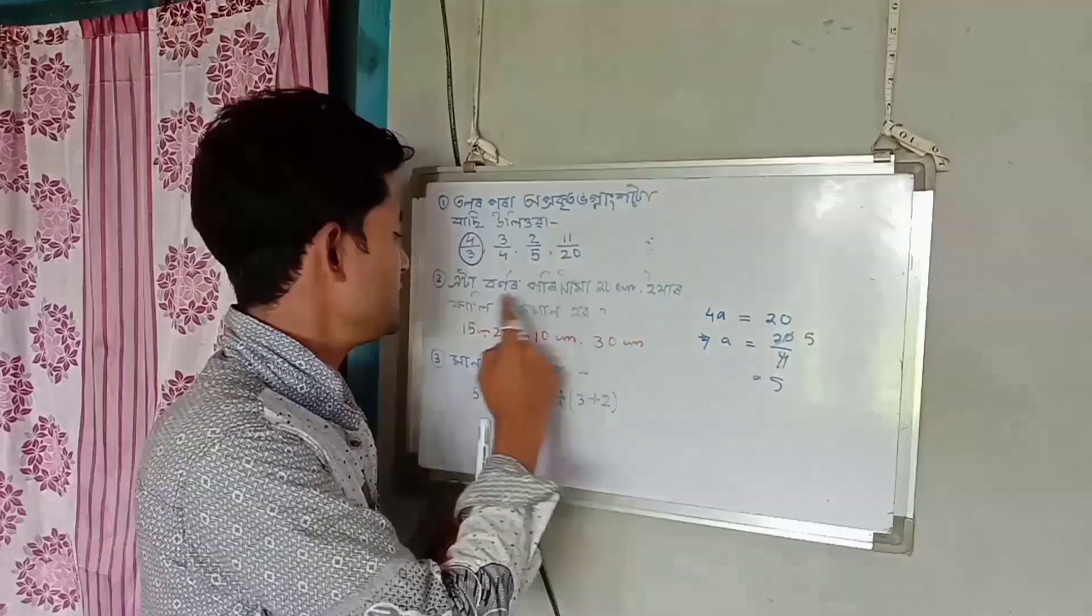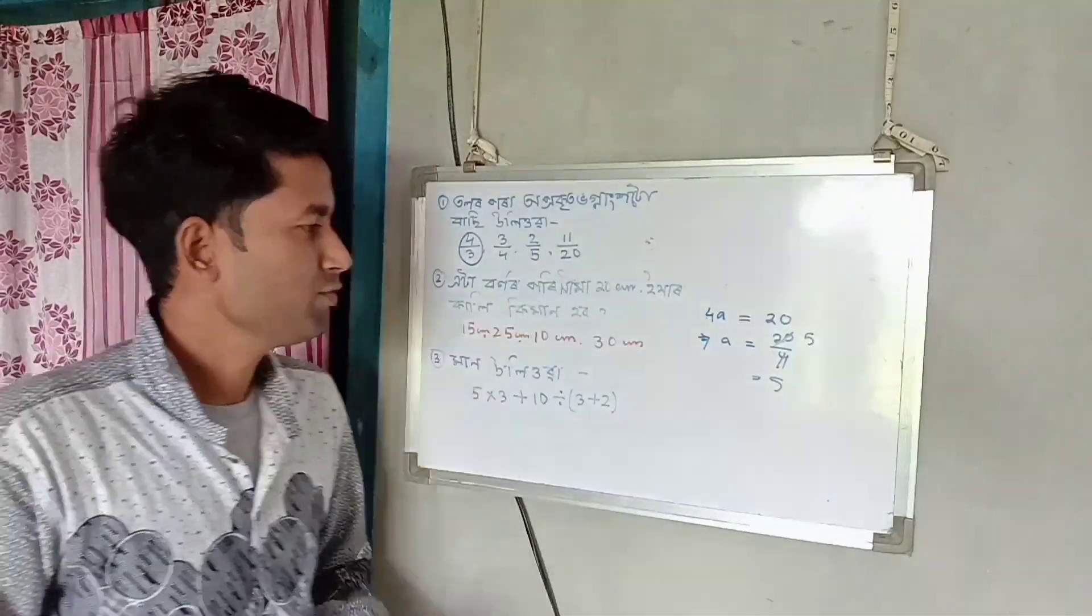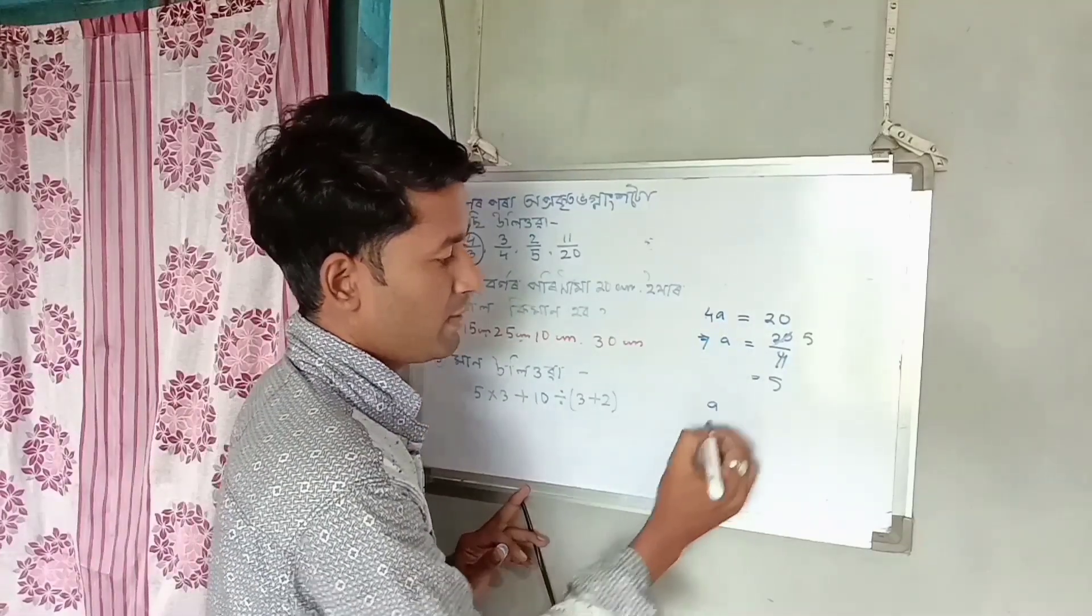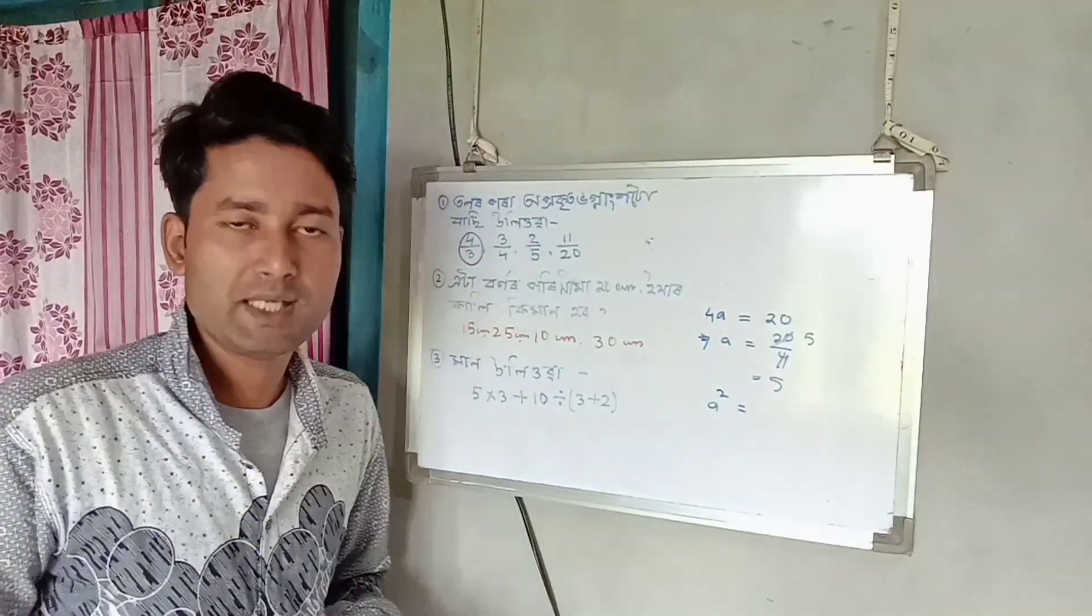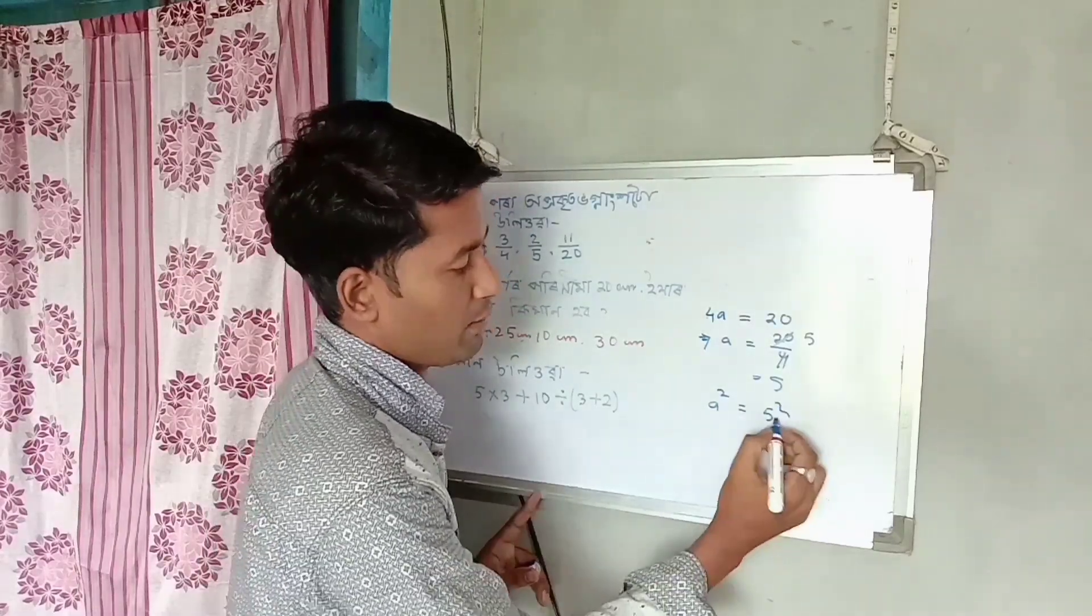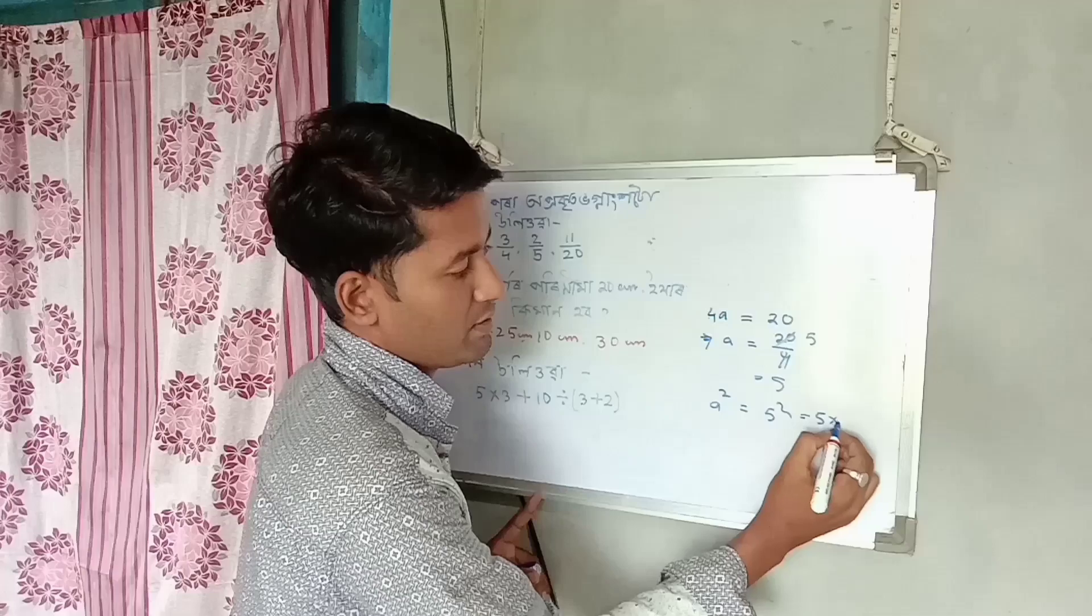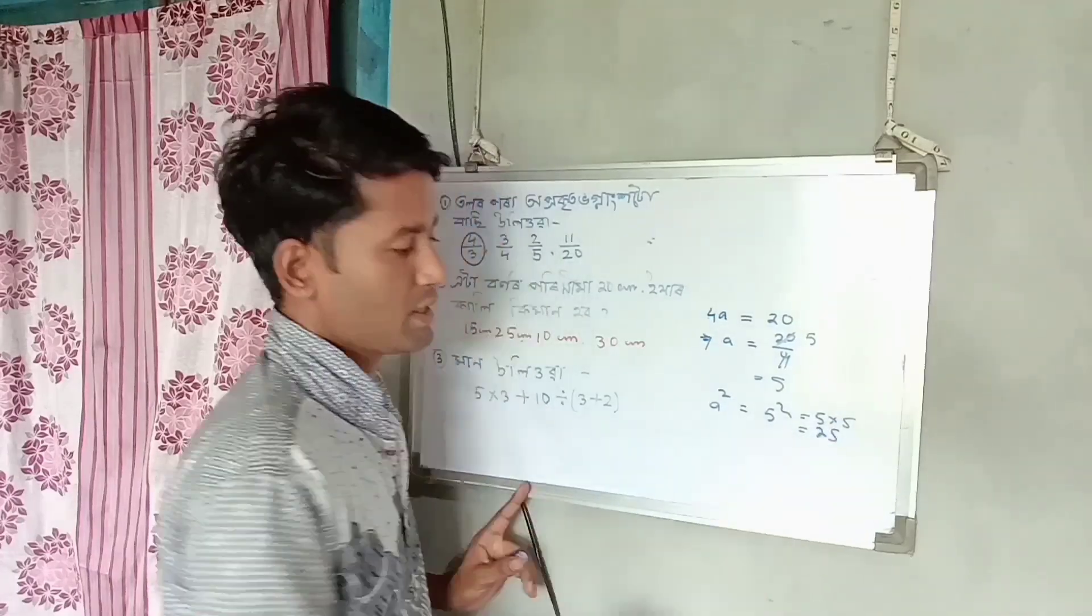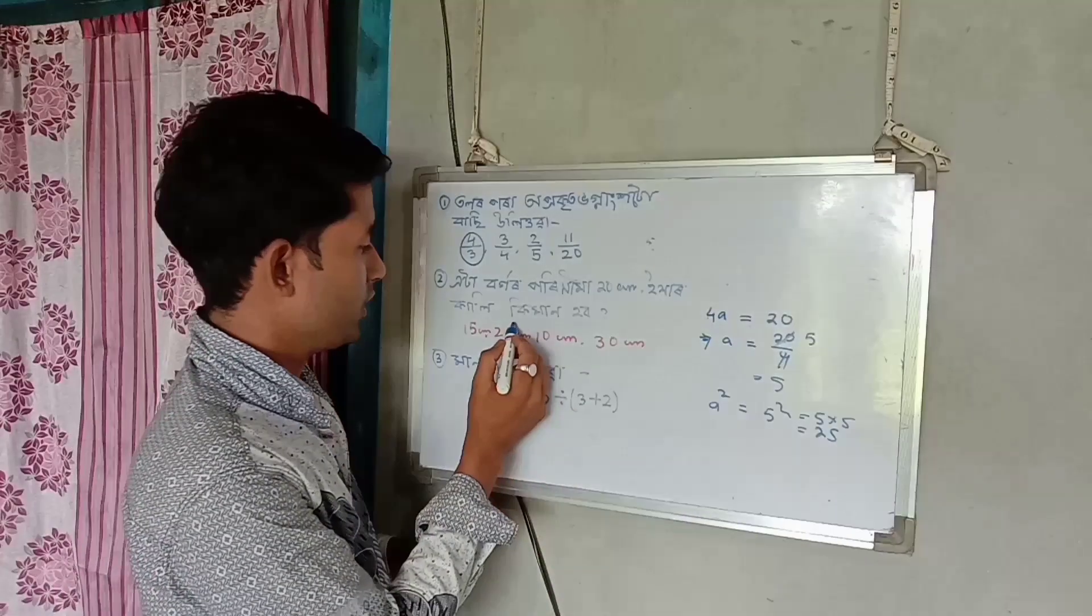What is the value of one side? To find one side, we need the formula for area. If we square it, if 5 is the side and we square it, then 5 square means 5 into 5, and the answer is 25.